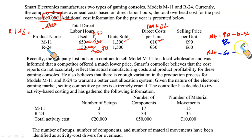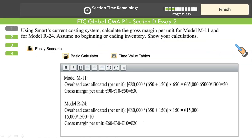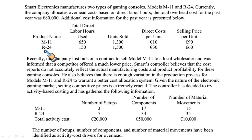The gross profit under the absorption system is 30 euros for M11 and 20 euros for R24. Now using activity-based costing, we calculate the gross profit margin for model M11 and model R24. Assume no beginning or ending inventories. Instead of using a single blanket rate, we will have three different rates.